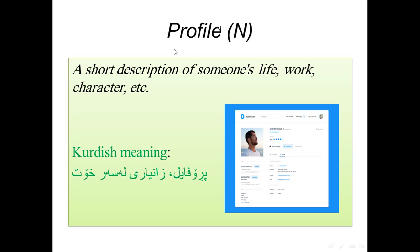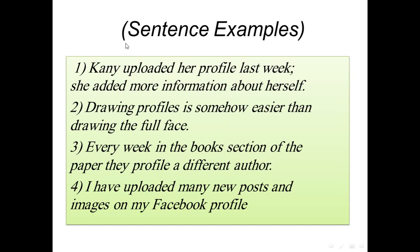Another vocabulary in this lesson is 'profile'. Its word form is noun. A profile is a short description about someone's life, work, character, or educational degree. The Kurdish meaning of profile is 'profile'. As you see from the picture, the lines of text next to the person's image belong to him, describing his name, phone number, and age — all a description of that man.